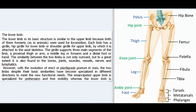The lower limb in its basic structure is similar to the upper limb because both of them, formerly as in animals, were used for locomotion. Each limb has a girdle—hip girdle for the lower limb or shoulder girdle for the upper limb—by which it is attached to the axial skeleton. The girdle supports three main segments: a proximal thigh or arm, a middle leg or forearm, and a distal foot or hand. The similarity between the two limbs is not only outward but also found in the bones.